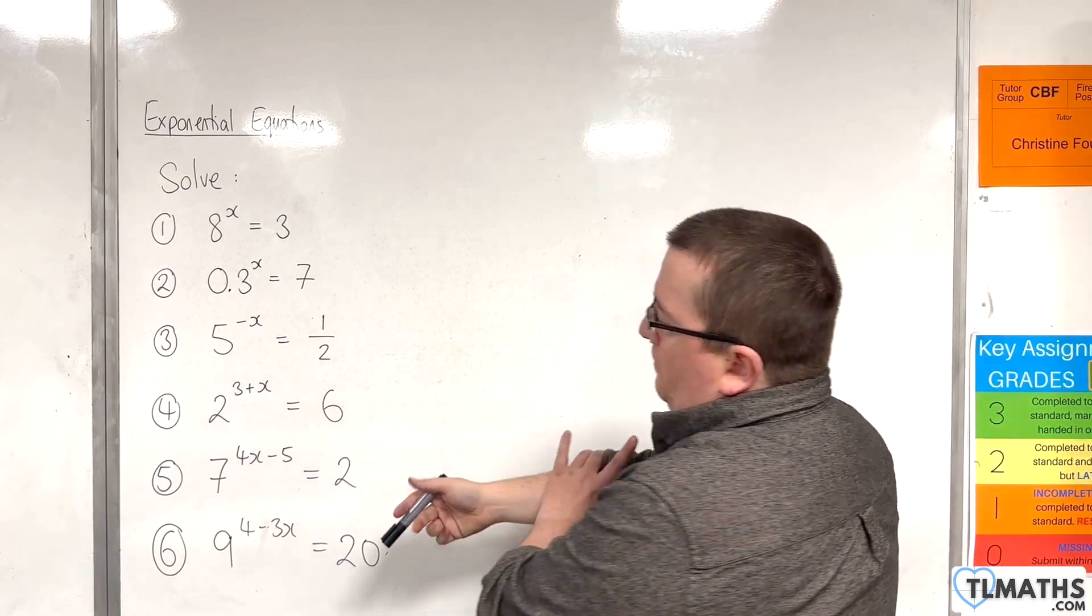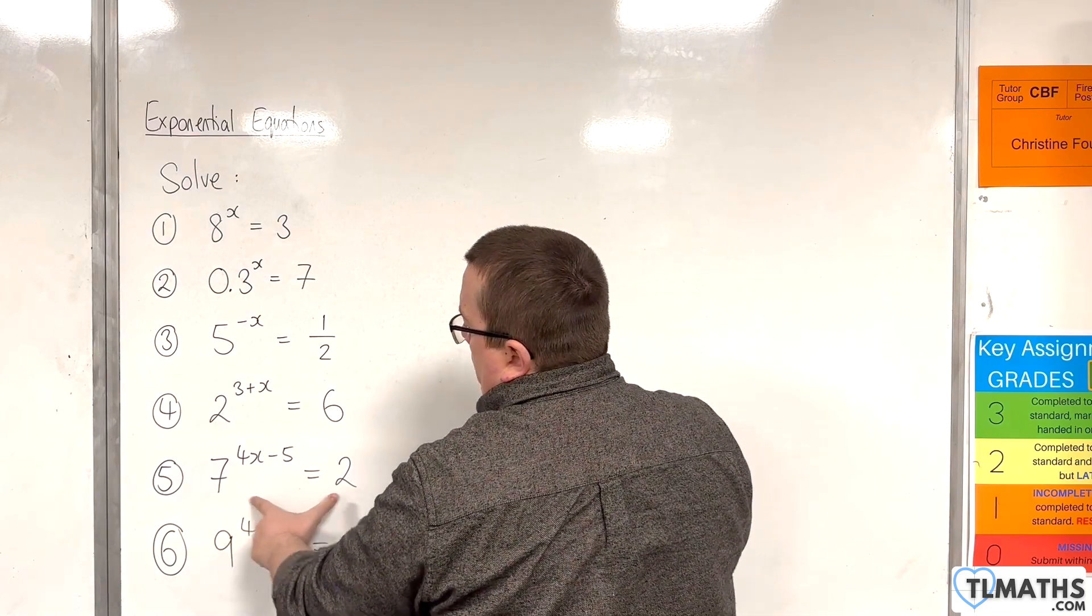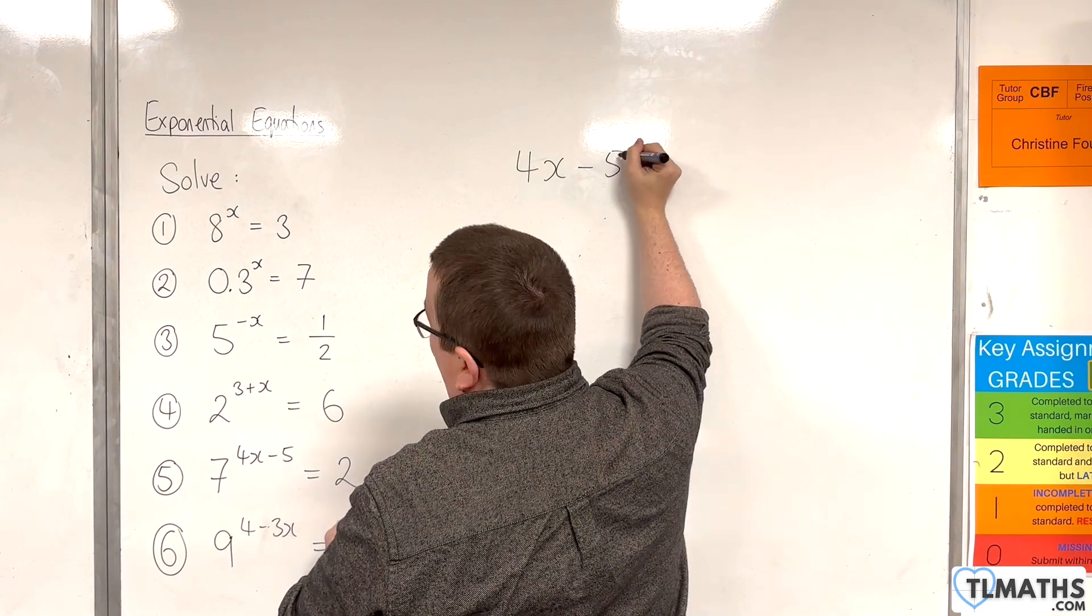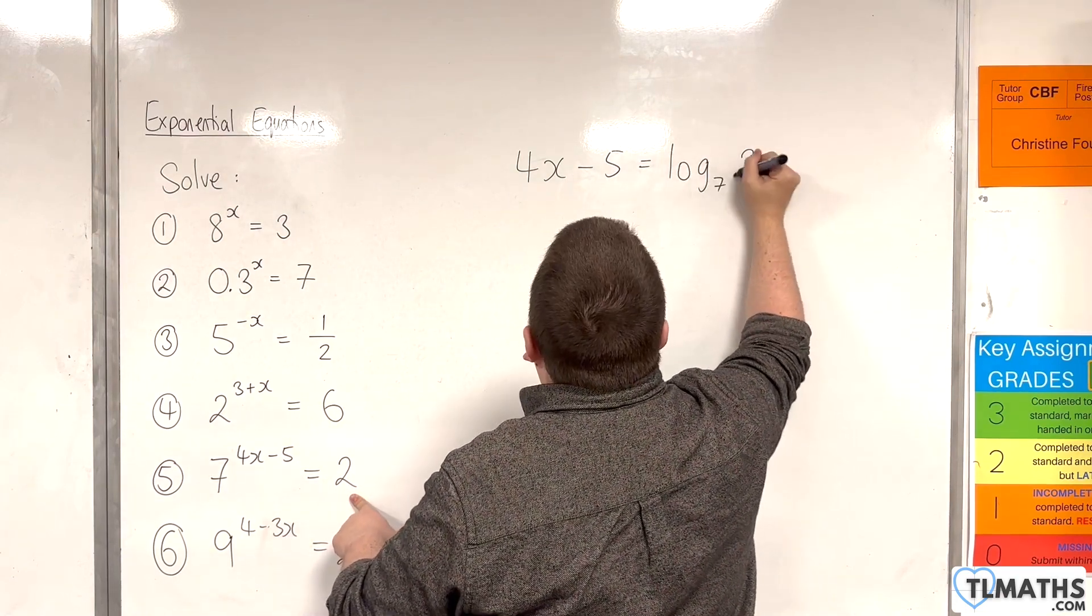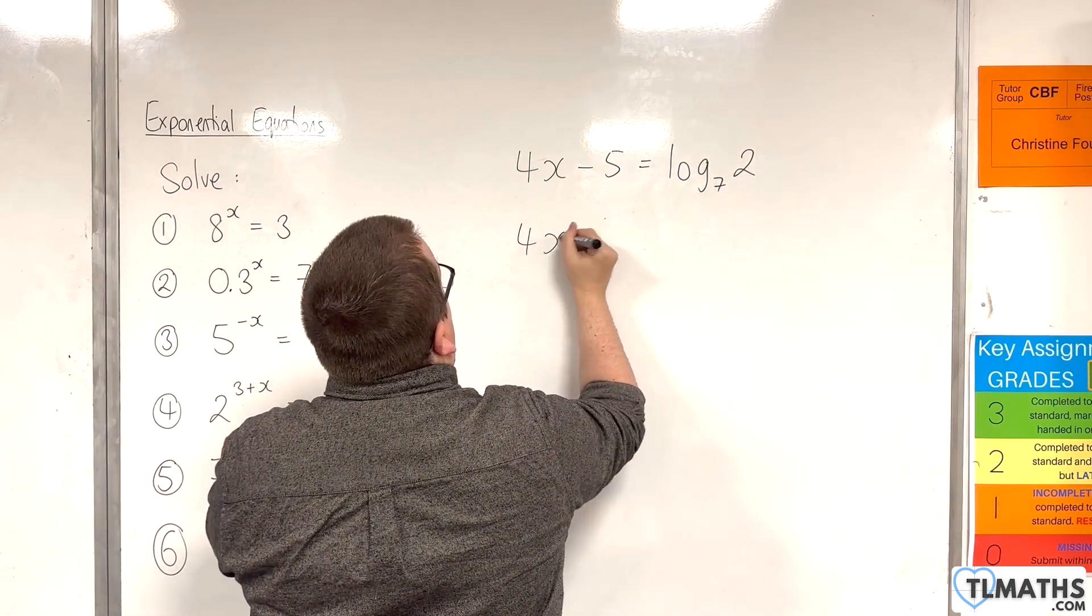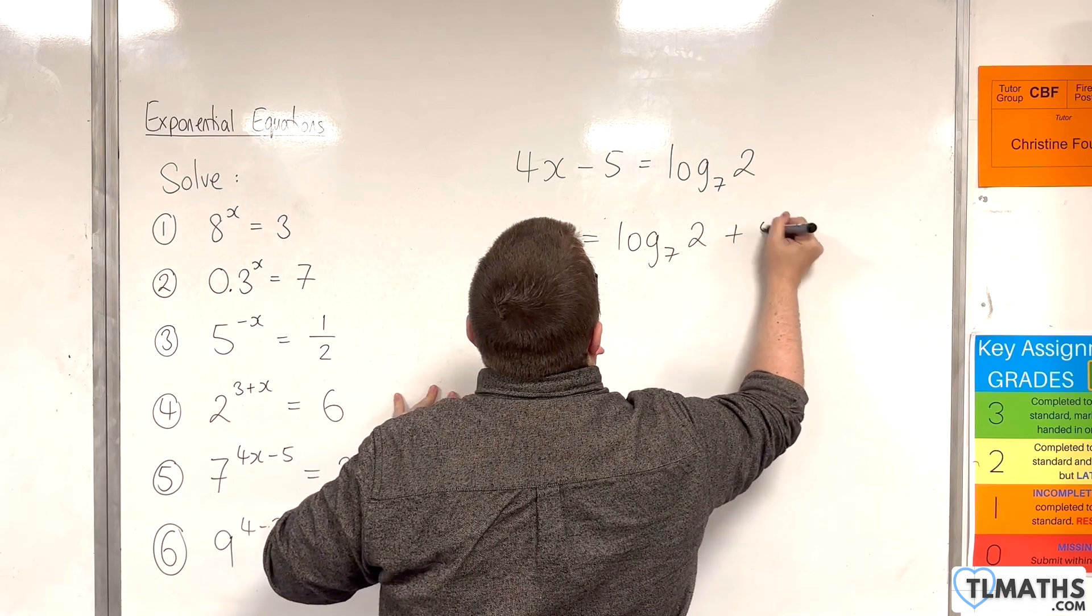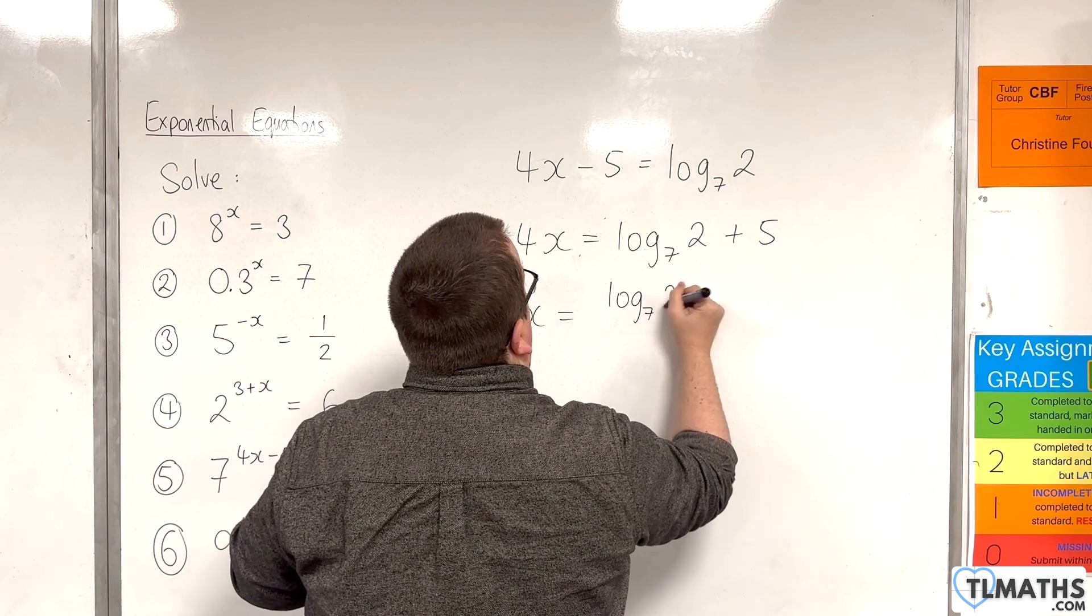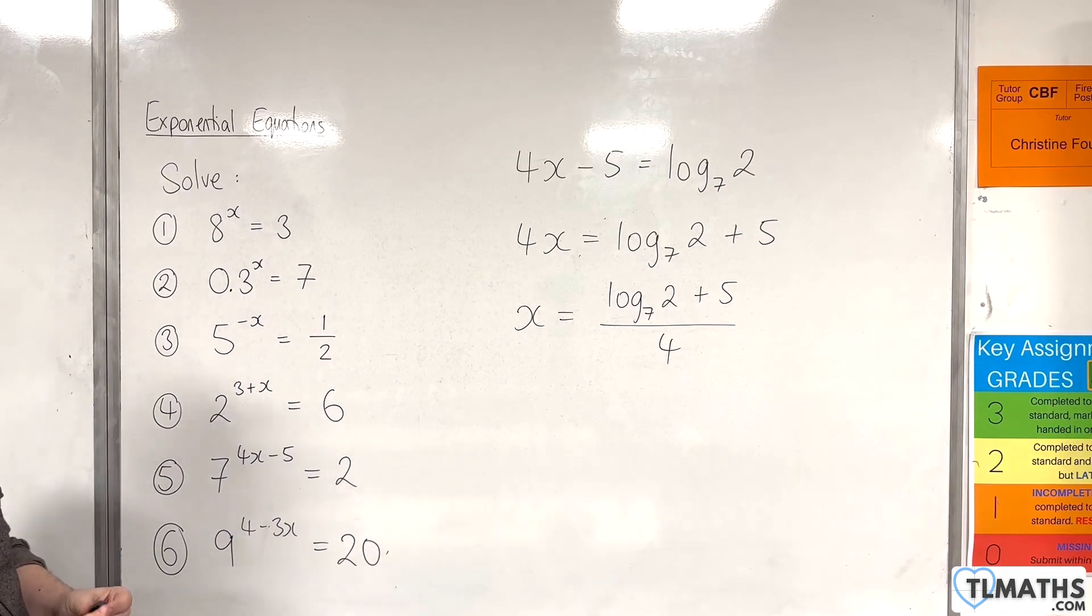Number 5, we have 7 to the power of 4x take away 5 equals 2. Go from exponential form to logarithmic form. 4x take away 5 is going to be log base 7 of 2. So add the 5 to both sides, and then divide through by 4. So log base 7 of 2 plus 5 all over 4. That's the exact answer to number 5.